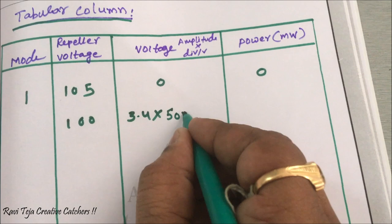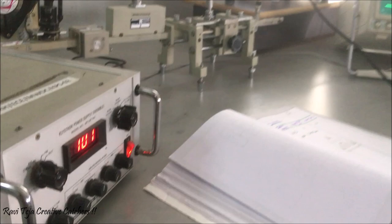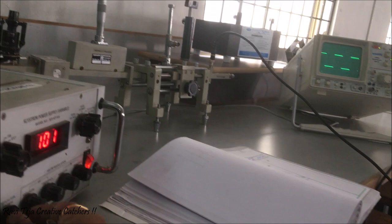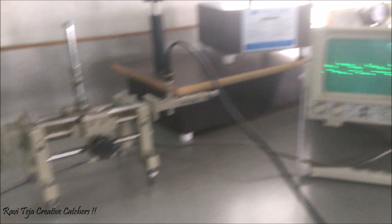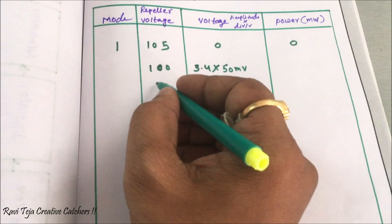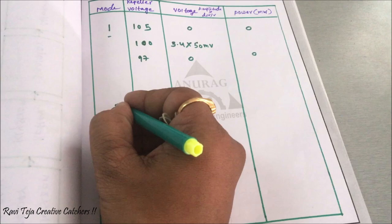At 100 volts we get 3.4 × 50 millivolts. We then rotate the reflector voltage further. At 97 volts, the signal is lost — that is the end point of mode one. So mode one: start at 105 V (amplitude 0), peak at 100 V (3.4 × 50 mV), end at 97 V (amplitude 0).